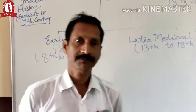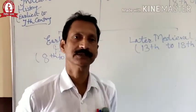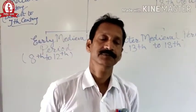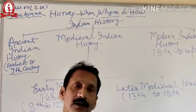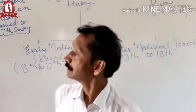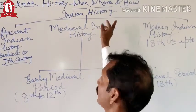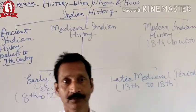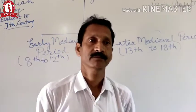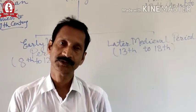Dear students of class 7, today we shall study history. The first chapter of history in class 7 is 'When, Where and How.' In this chapter we shall study about medieval Indian history.